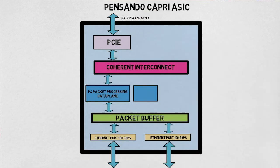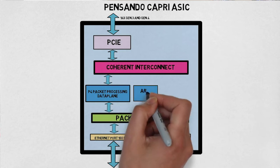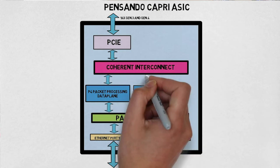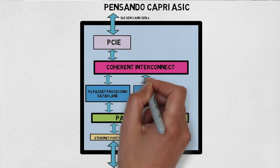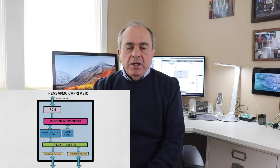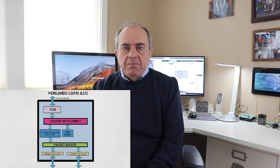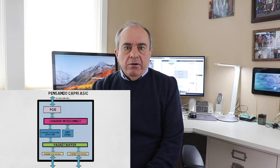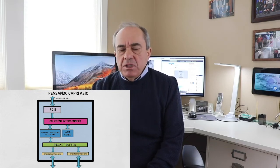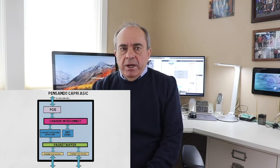We also have several ARM cores that can run an operating system like Linux. They are in charge of booting the device, programming the P4 data plane, and running the control and management plane. For example, the gRPC REST APIs used to program the chip run on these ARM cores, and so does a protocol like BGP if required.